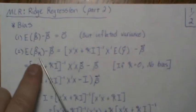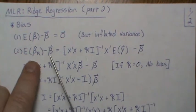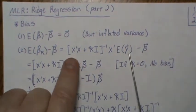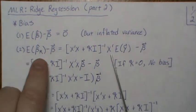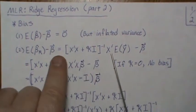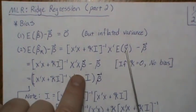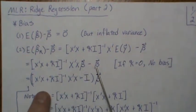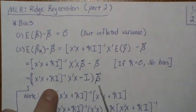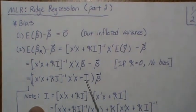Now let's look at the bias associated with the Ridge Estimator. We plug in what we know about it. This is the Ridge Estimator with y, but the expected value goes into the y and leaves the constants. The expected value of y is X beta.